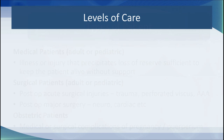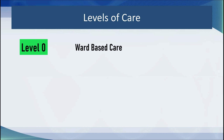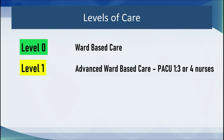There are different types of wards in hospitals, and the relative ratio of nurses to patients really defines the level of care patients receive. Level zero is ward-based care with a variable nurse-to-patient ratio, perhaps one to six or higher. Level one is advanced ward-based care, such as a PACU or recovery room for extended periods after major surgery, generally with a one-to-three or one-to-four nurse-to-patient ratio.